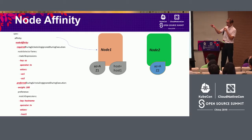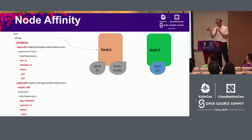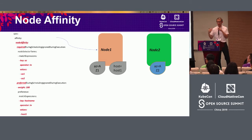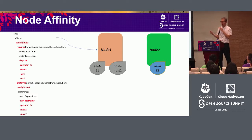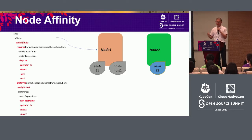There are all kinds of requirements you need to match. For example, node one has labels on it. With AZ1 or AZ2 they can be coordinated, and they also meet all those requirements. With the label of host1, it is preferred with a weight of 100. In terms of coordination, it uses labels to describe topology and to describe the hard requests and soft ones.